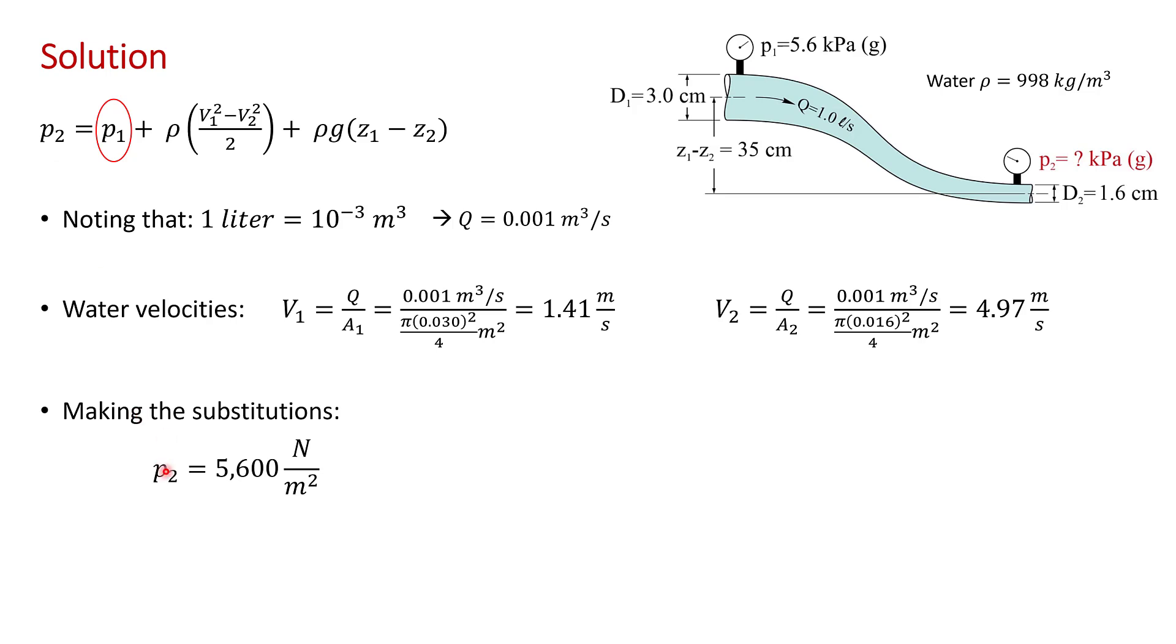Now, we have everything we need to make the substitutions. P1 is 5.6 kilopascals, so that's 5,600 newtons per square meter. Don't forget the 10 to the 3. Next, we have the kinetic energy term. I've just made the substitutions for V1 and V2.